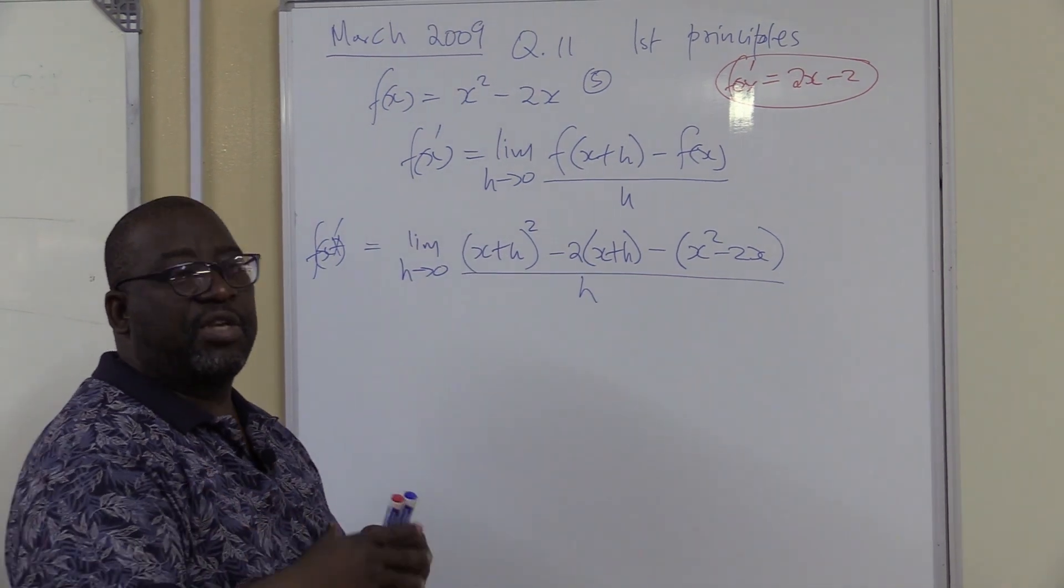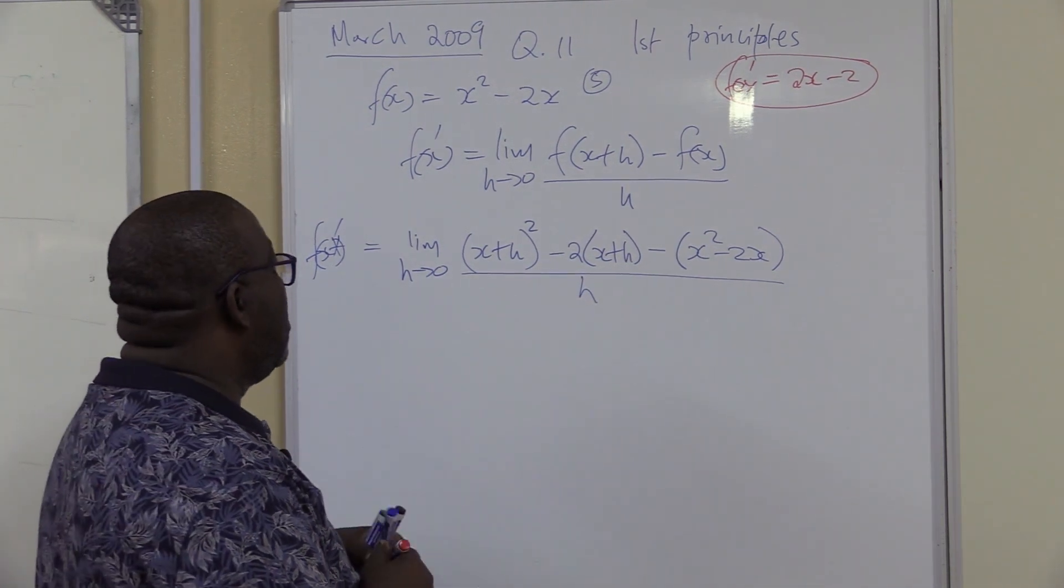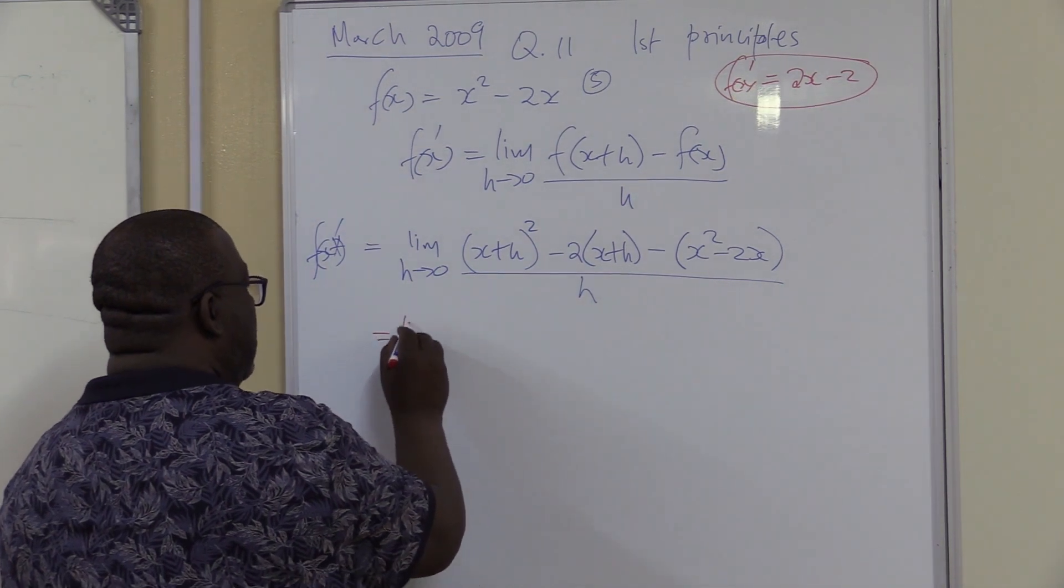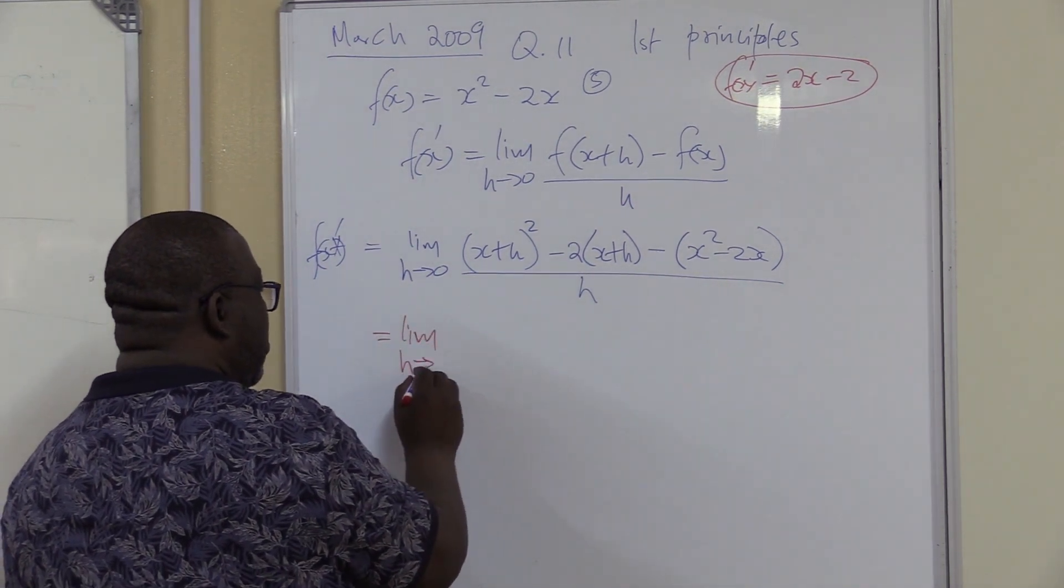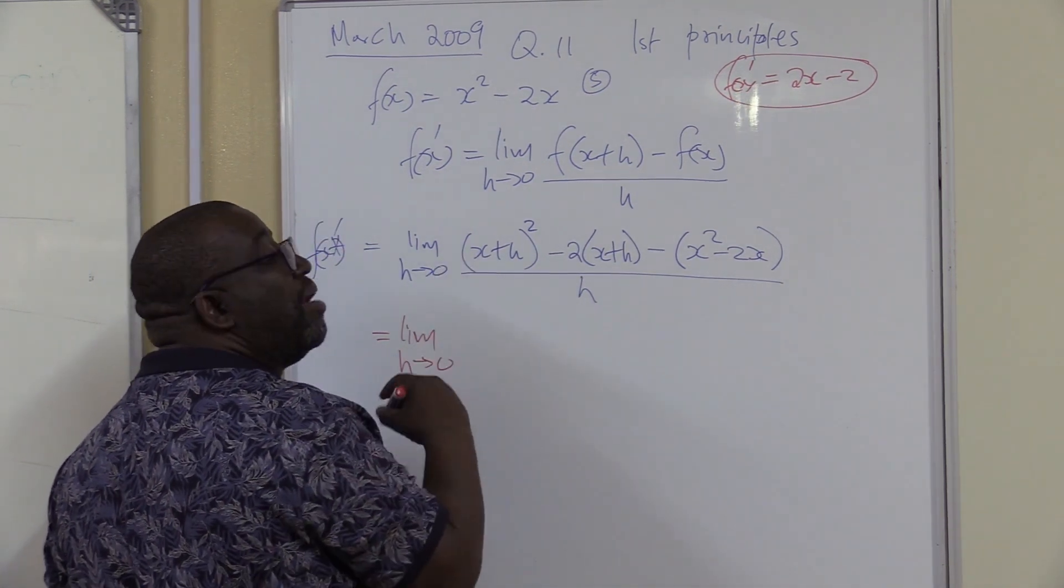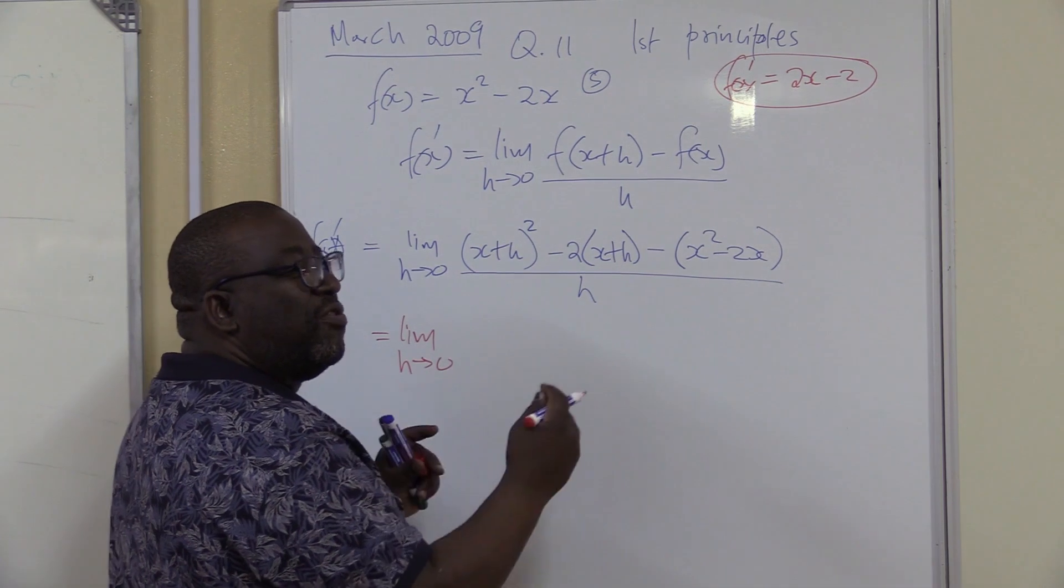The next step, it's just basic algebra where, in this particular case, you square a binomial. This equals the limit as h approaches 0. You work this thing out. This is x times x.